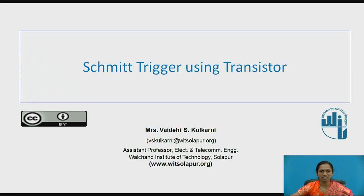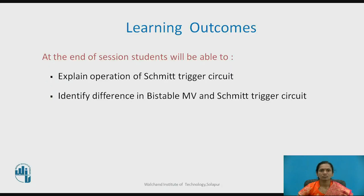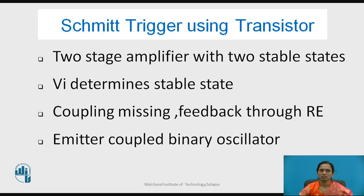This session covers the Schmitt trigger using transistors. By the end of the session, students will be able to explain the operation of a Schmitt trigger circuit and identify the difference between a bistable multivibrator circuit and a Schmitt trigger circuit. The Schmitt trigger circuit can be obtained with the help of a transistor or operational amplifier, and here we will concentrate on the transistor-based implementation.